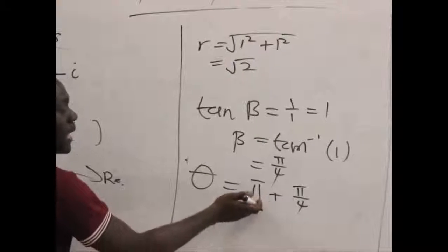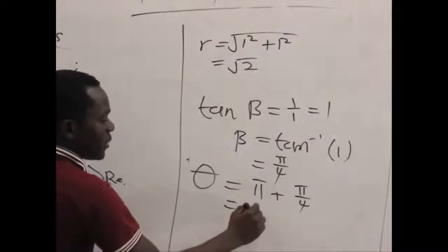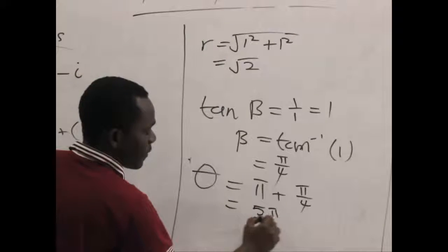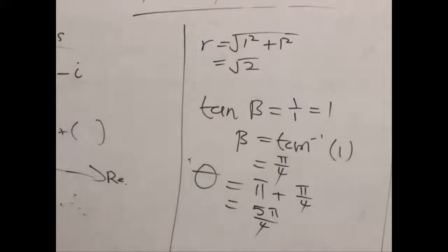So when we add pi to one-fourth pi we are eventually getting five-fourths of pi which is pi, five pi over four. So that's our theta.